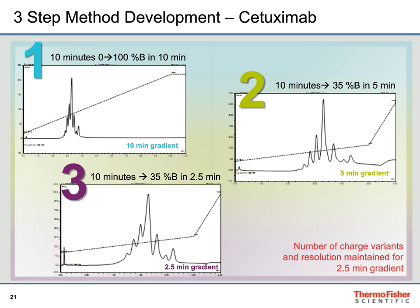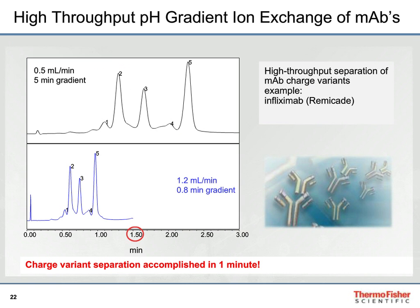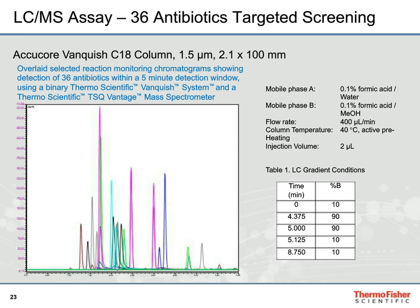For another monoclonal antibody — infliximab — we achieved charge variant analysis in as low as 1 to 1.5 minutes. This also shows how our AccuCore Vanquish column in a generic gradient works effectively with our powerful mass spectrometers. In an analysis of 36 antibiotics, the mass spectrometer with selected transitions is able to identify all antibiotics, with quantitation workflows through Chromelion control of the mass spectrometer, completing the complex mixture separation in just 6 minutes.